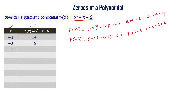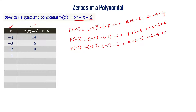For x equal to minus 2: p(-2) = (-2)² minus (-2) minus 6 = 4 + 2 minus 6 = 0. For x equal to minus 1: p(-1) = (-1)² minus (-1) minus 6 = 1 + 1 minus 6 = minus 4.